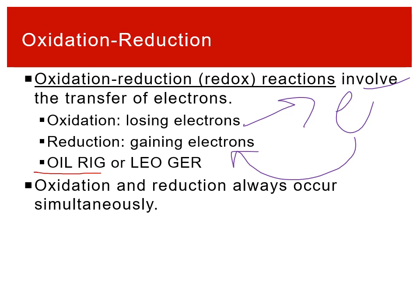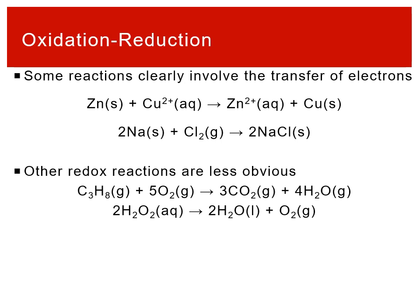Another mnemonic is LEO GER — Loss of Electrons is Oxidation, Gain of Electrons is Reduction. There's a lot of confusing language in redox chemistry, so use these mnemonics. Importantly, oxidation and reduction always occur simultaneously — you don't have something losing electrons without something else gaining them.